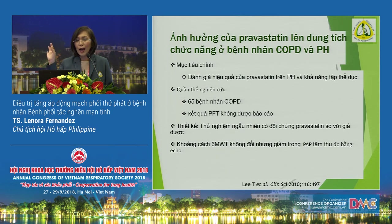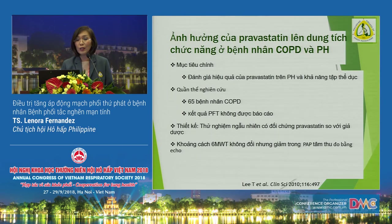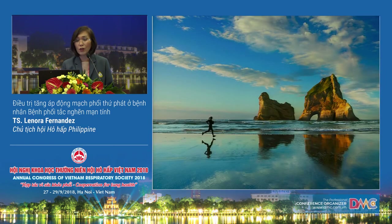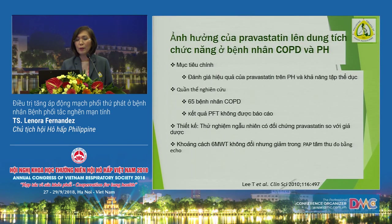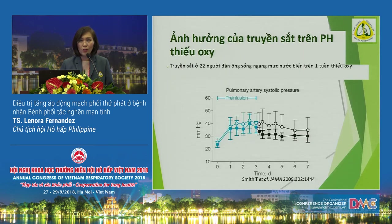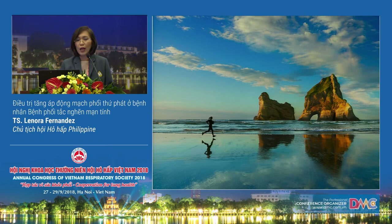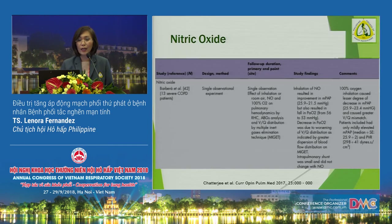Riociguat acts on soluble guanylate cyclase through the nitric oxide pathway. One study showed improvement in pulmonary artery pressures but no change in lung function — just given for two days. Riociguat is already part of standard treatment for group 1 PAH. Inhaled nitric oxide — a one-time administration — was presented at the 2018 ATS convention showing improvement in pulmonary artery pressure and six-minute walk test, but is not considered first-line for PH in COPD.